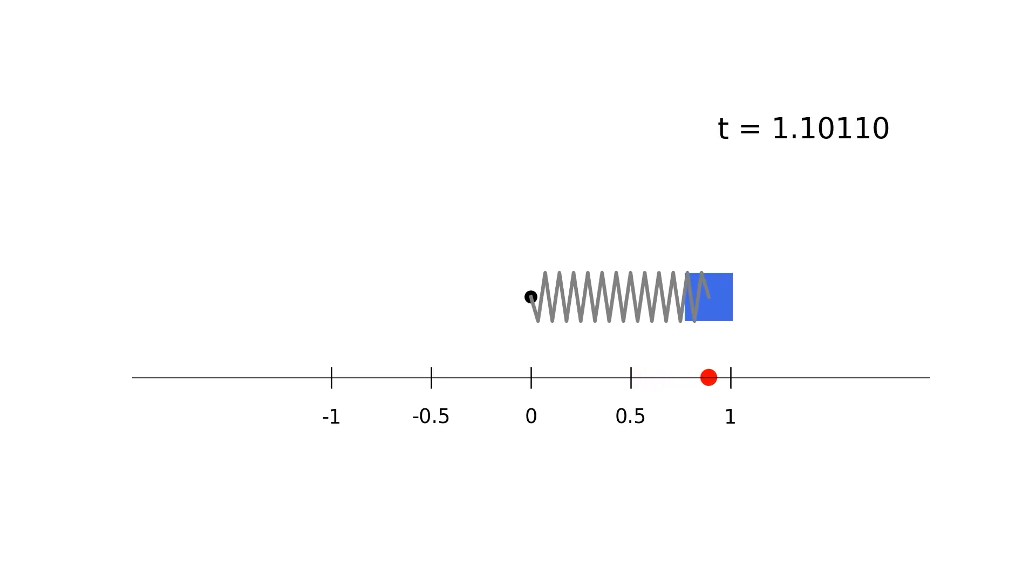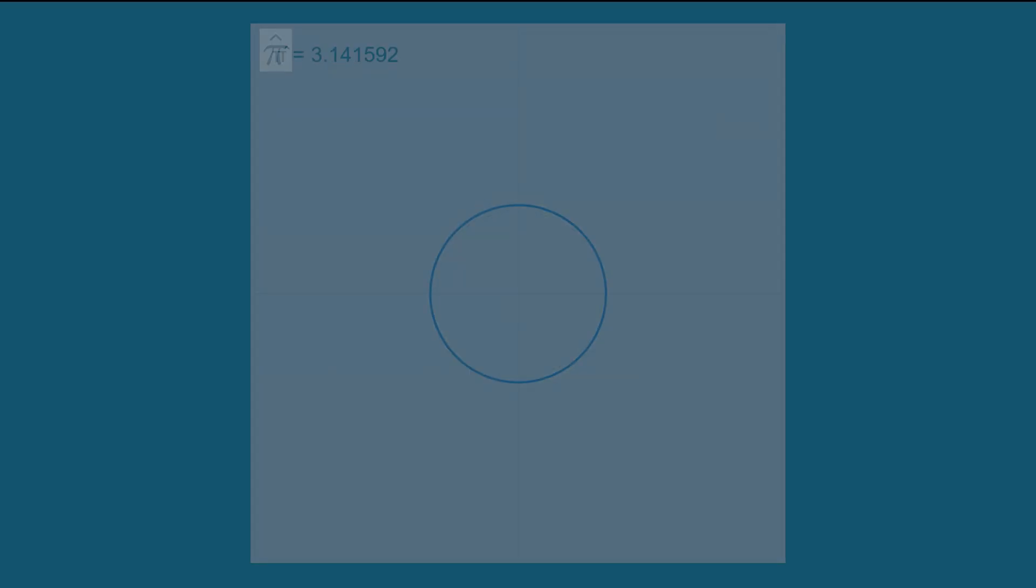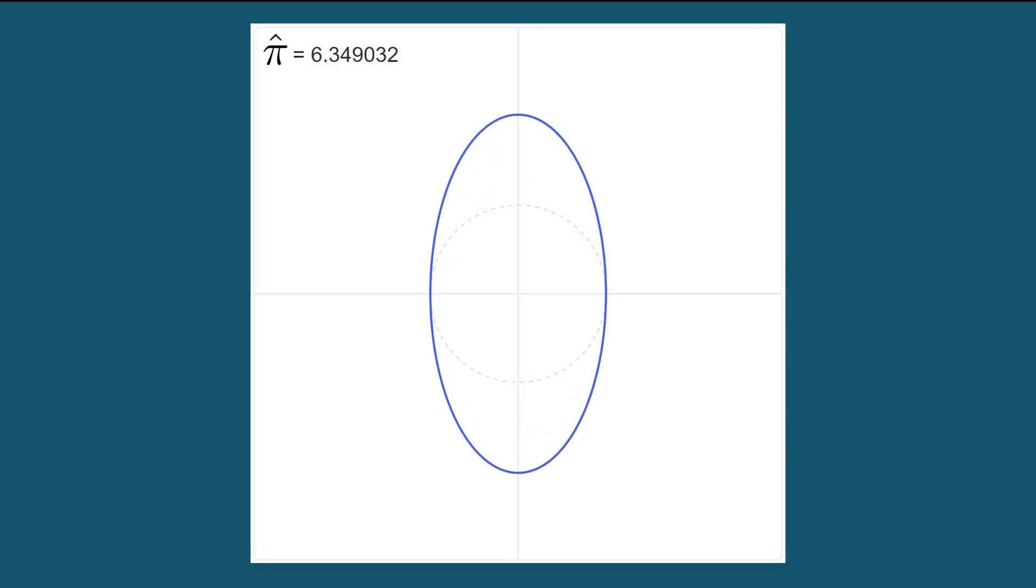In today's adventure, we saw that pi naturally emerges from oscillation. We also saw that we can choose the value of pi to be what we like, with the consequence that our geometry becomes warped or non-Euclidean. Pi is not about circles, but rather about rhythm through time and the symmetry of Euclidean space.